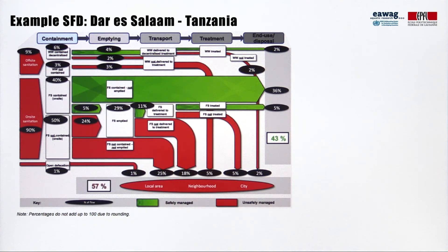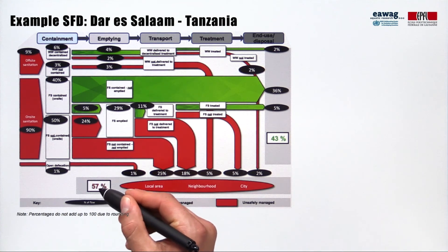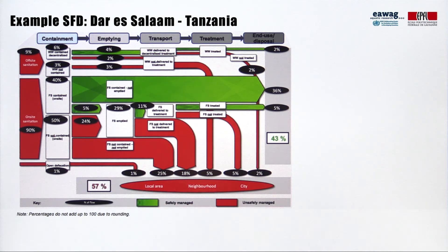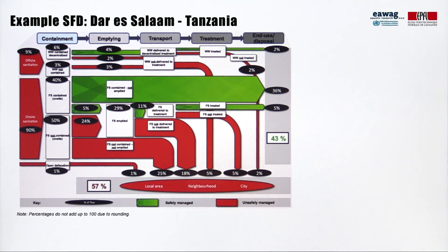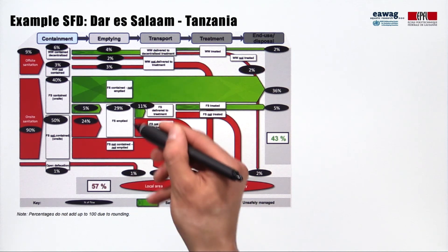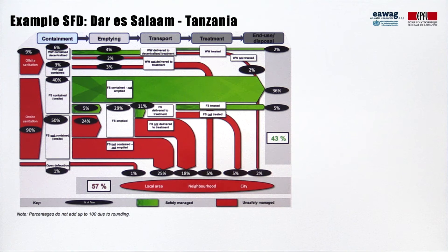On the left-hand side, you can see that 9% of the population uses off-site sanitation, 90% use on-site sanitation, and 1% practices open defecation. In total, we found that 43% of excreta are safely managed and 57% are unsafely managed. Of the 57% that is unsafely managed, the majority results from fecal sludge that is not contained and not emptied — the scenario where the water table is high and excreta infiltrates into the groundwater. Additionally, more than half of the emptied fecal sludge is actually not delivered to treatment and directly dumped into the environment, contributing another 18% to unsafely managed excreta.